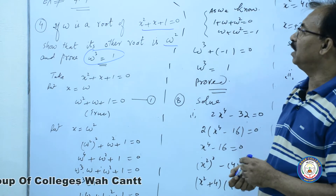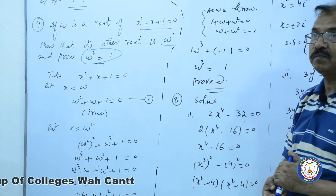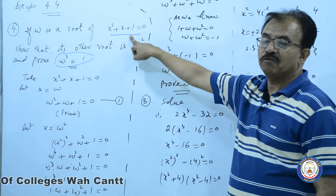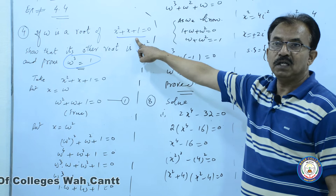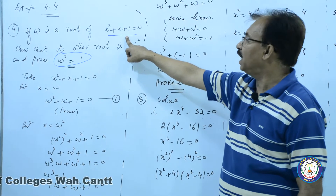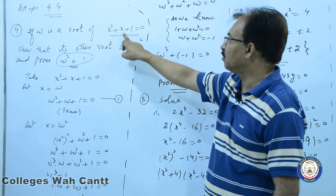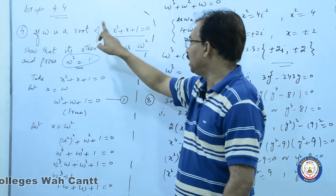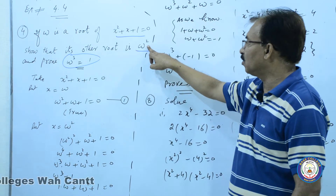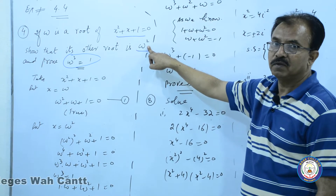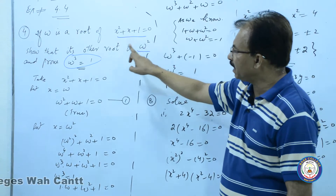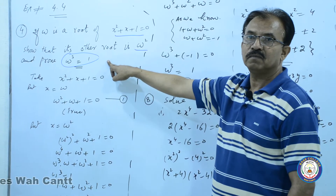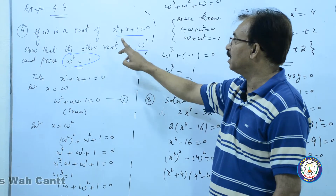اس question میں سوال یہ ہے کہ یہ ایک quadratic equation ہے، لازمی اس کے دو root ہوں گے۔ اس نے کہا ہے کہ ایک root omega ہے، show کرنا ہے کہ دوسرا root omega square ہے۔ دوسری بات یہ ہے کہ omega cube کیا 1 کے equal ہوتا ہے۔